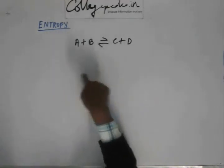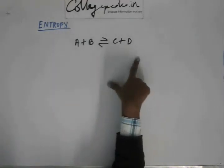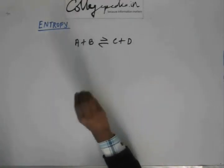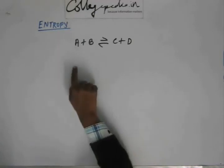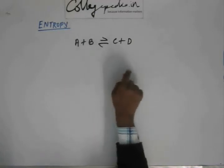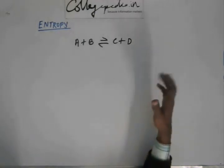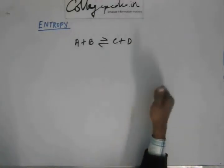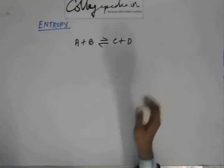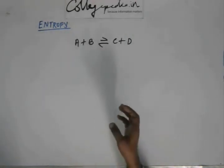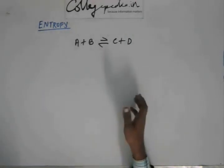At equilibrium, the energy distribution within the system is not changing because the number of particles of A, B, C, and D is constant. Since energy distribution depends on the number of atoms, and those numbers are not changing, the energy distribution remains constant at equilibrium.